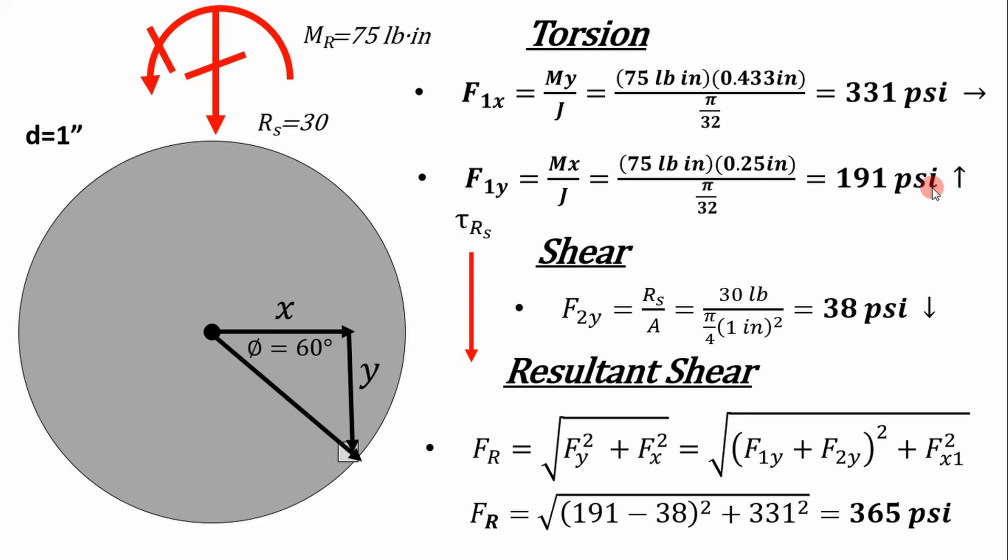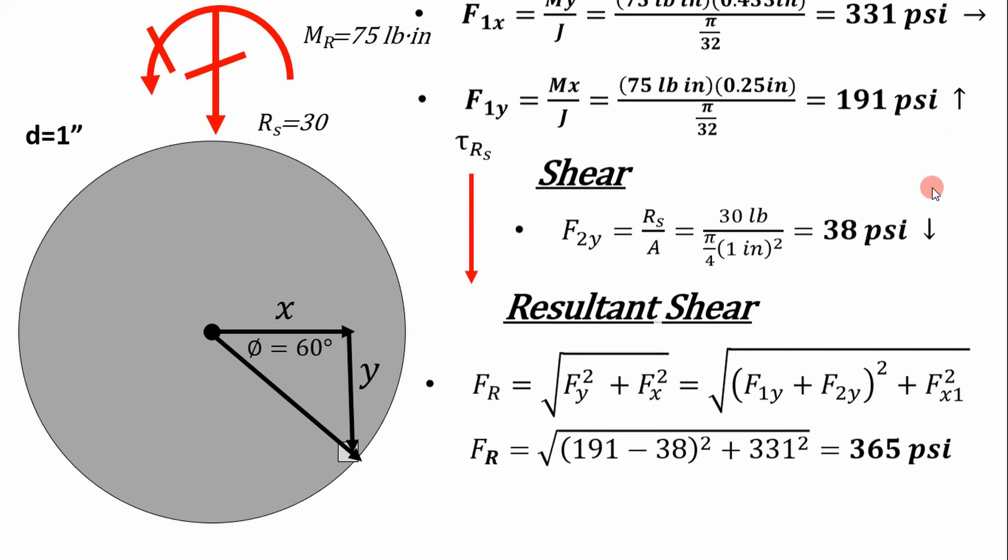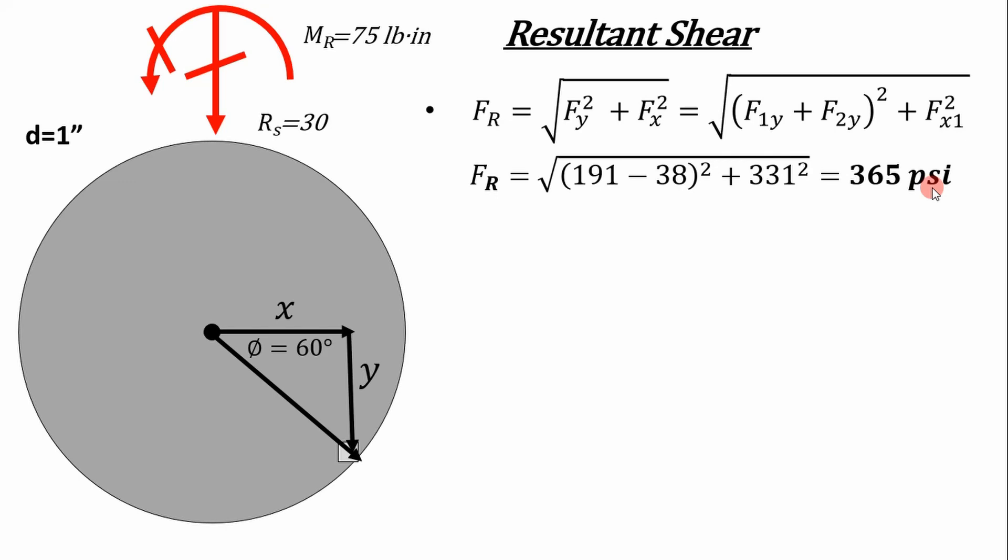So what do you do next? Why do you want to determine the shear stress? Well, now you can compare it to a shear allowable to ensure that your design is built well enough to handle the loads. To calculate a shear allowable, a lot of times you're not going to have the shear allowable on file. So you can use this correlation from Mises stress, which simply states that the shear allowable is going to be 0.577 times the yield stress of the material. That is a very important equation in structural engineering. You've got to know that by heart.